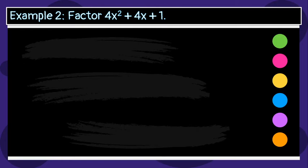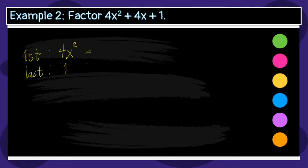Sample 2. Factor 4x squared plus 4x plus 1. Let's check the first and last terms. The first term is 4x squared and the last term is 1. The square root of 4x squared is 2x, meaning 2x times 2x equals 4x squared. The square root of 1 is 1. These are the square roots. Both first and last terms are perfect squares.